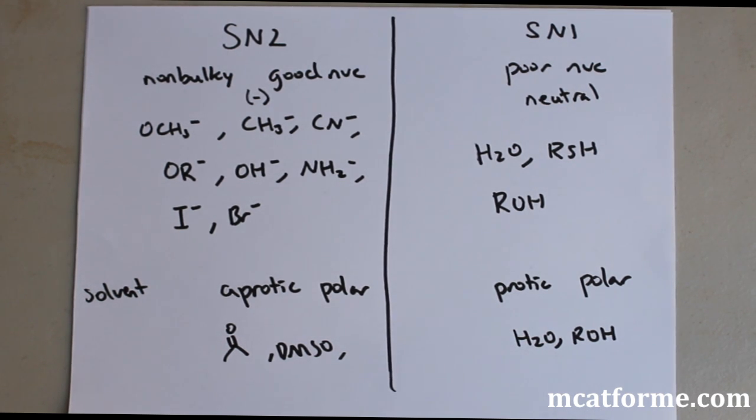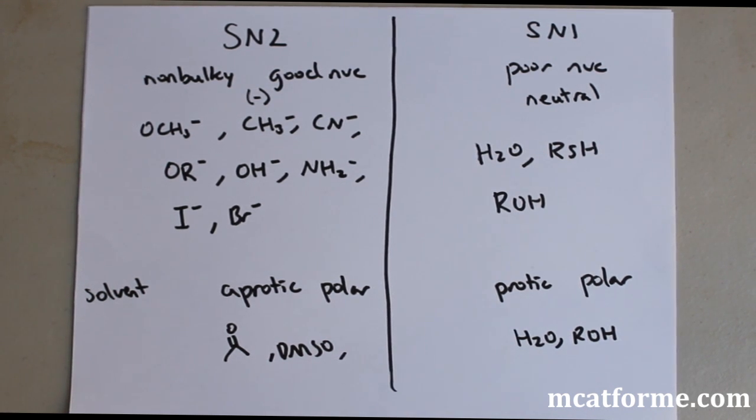Aprotic, no hydrogen bonding. Protic, there's hydrogen bonding. For example, we have acetone and we have DMSO for SN2. And for SN1, we have stuff like water, alcohol, anything that can do hydrogen bonding.